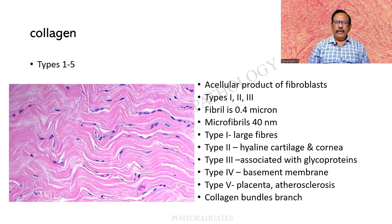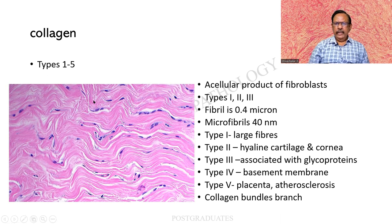There are 5 different types of collagen. Type 1 is large fibre. Type 2 is in the hyaline cartilage and collagen. Type 3 is associated with glycoproteins. Type 4 is basement membrane. And Type 5 is found in the placenta and in lesions such as atherosclerosis. The collagen bundles can branch but the individual fibrils will not be branching, and there can be microfibrils which are about 40 nanometres.